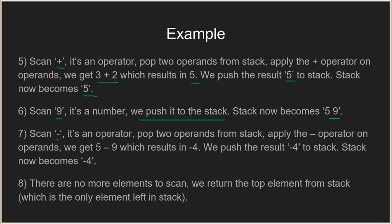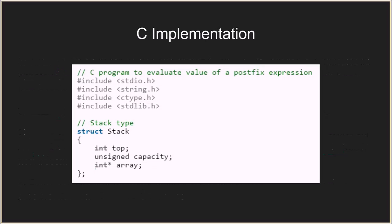Now we scan the subtraction operator. We pop two operands from the stack and apply subtraction: 5 minus 9 equals minus 4. We push minus 4 onto the stack. Stack: [−4]. The whole expression is now traversed. We have just one element in the stack — minus 4 — which is the final answer, so we return it.